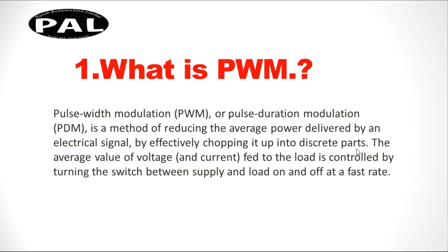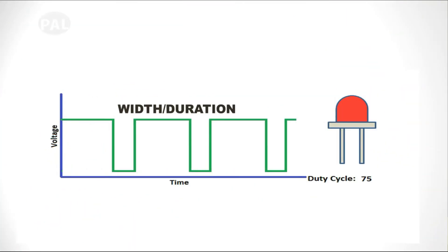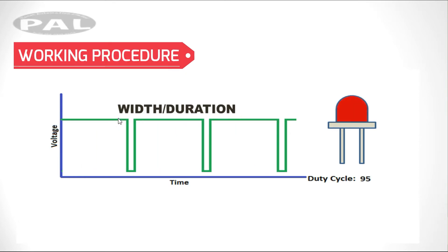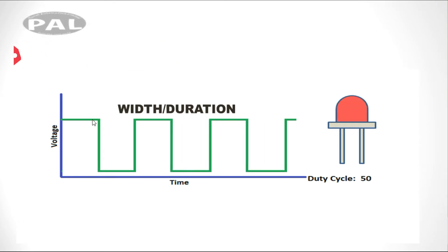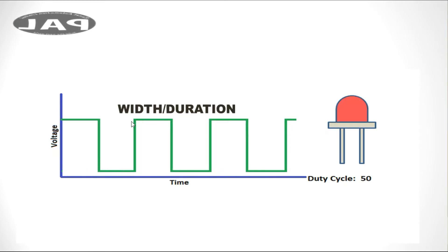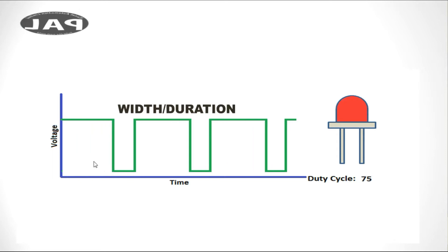PWM is a continuous process. Reducing your power this way means stepper motors or any kinds of servo motors are very effectively controlled in any practical sector. The average value of voltage and current to the load is controlled by switching between supply and load. The duty cycle ranges from 5% to 95%, and this is the off time and on time.